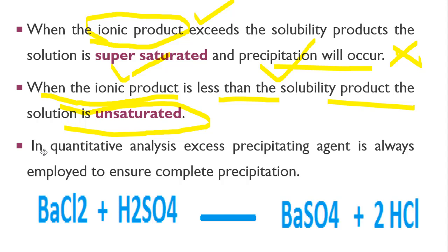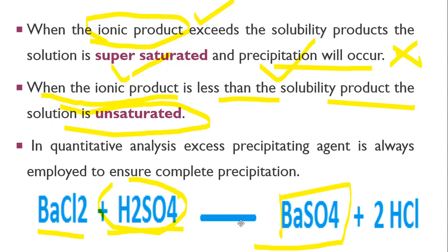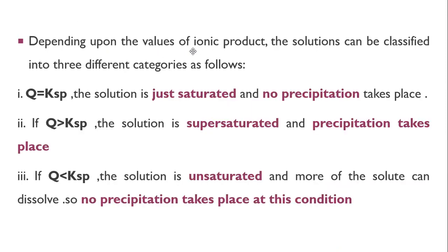In quantitative analysis, an excess precipitating agent is always employed to ensure complete precipitation. For example, adding excess sulfuric acid to barium chloride solution gives a precipitate of barium sulfate — complete precipitation is achieved because of the excess sulfuric acid. The ionic product is denoted by Q, and depending on its value the solution can be classified into three categories.